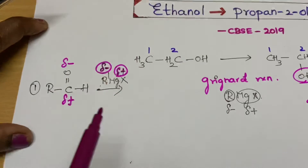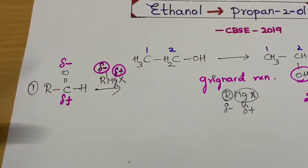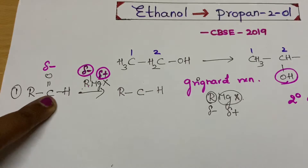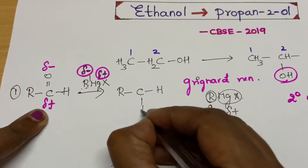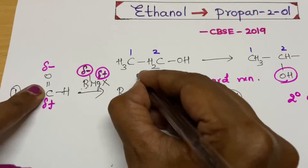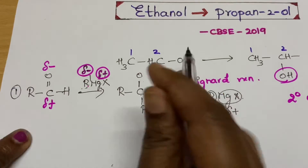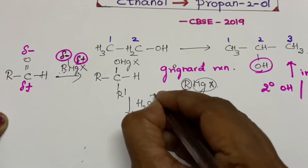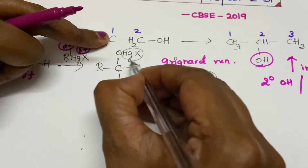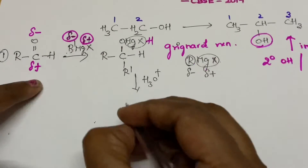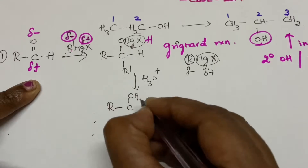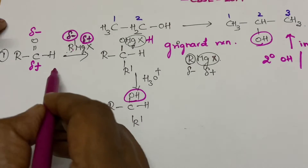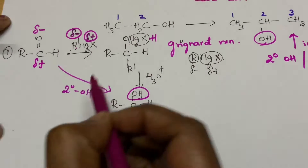After this addition, the double bond becomes a single bond. The product is R–CH(R')–O–MgX. Followed by hydrolysis with water, the MgX is replaced with hydrogen. So you get the secondary alcohol. Aldehyde plus Grignard reagent gives a secondary alcohol.